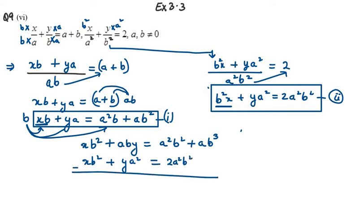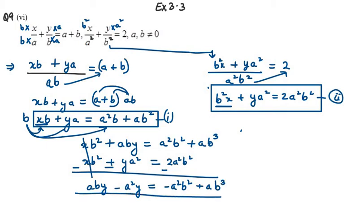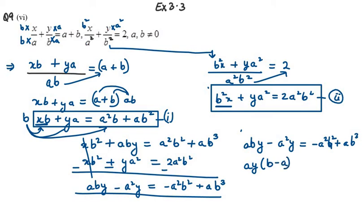Now we subtract these two equations. XB² minus XB² cancels out, and we are left with ABY minus A²Y equals A²B² minus 2A²B², which gives minus A²B² plus AB³. From the left-hand side we can take Y as common, giving us ABY minus A²Y equal to minus A²B² plus AB³.